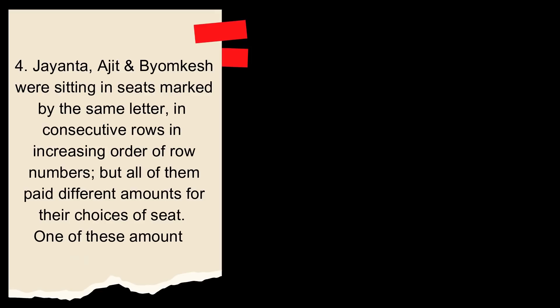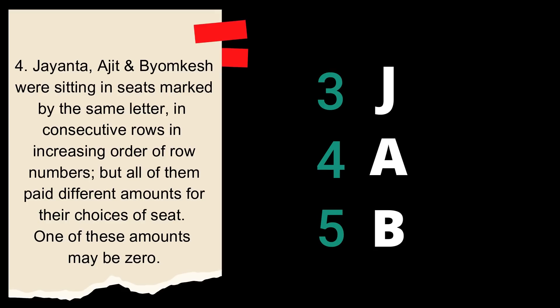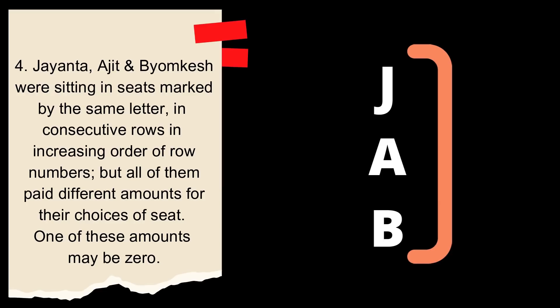Jayanta, Ajit and Byomkesh were sitting in seats marked by the same letter in consecutive rows in increasing order of row numbers. But all of them paid different amounts for their choice of seat. This is very important. All of them paid different amounts for their choice of seat. They are sitting in consecutive rows, one after another in increasing order. One of these amounts may be zero.